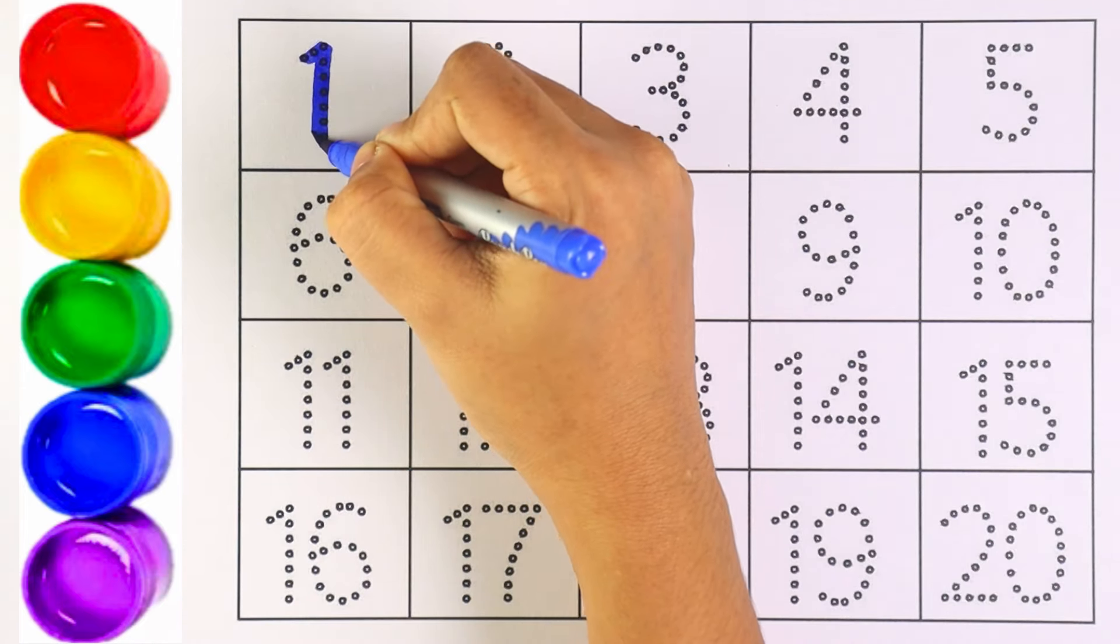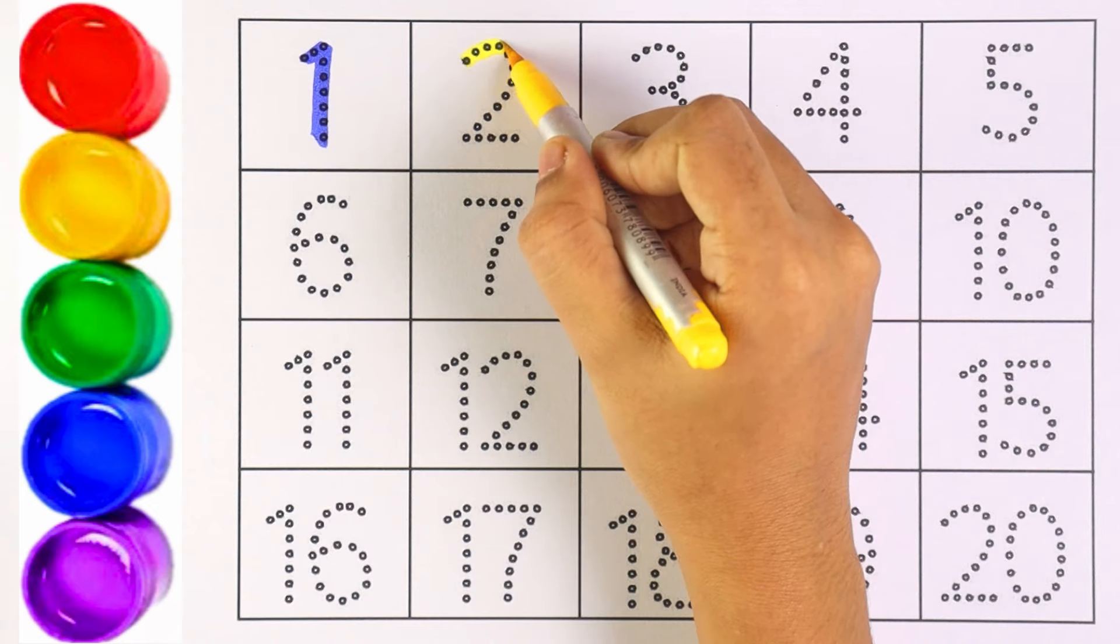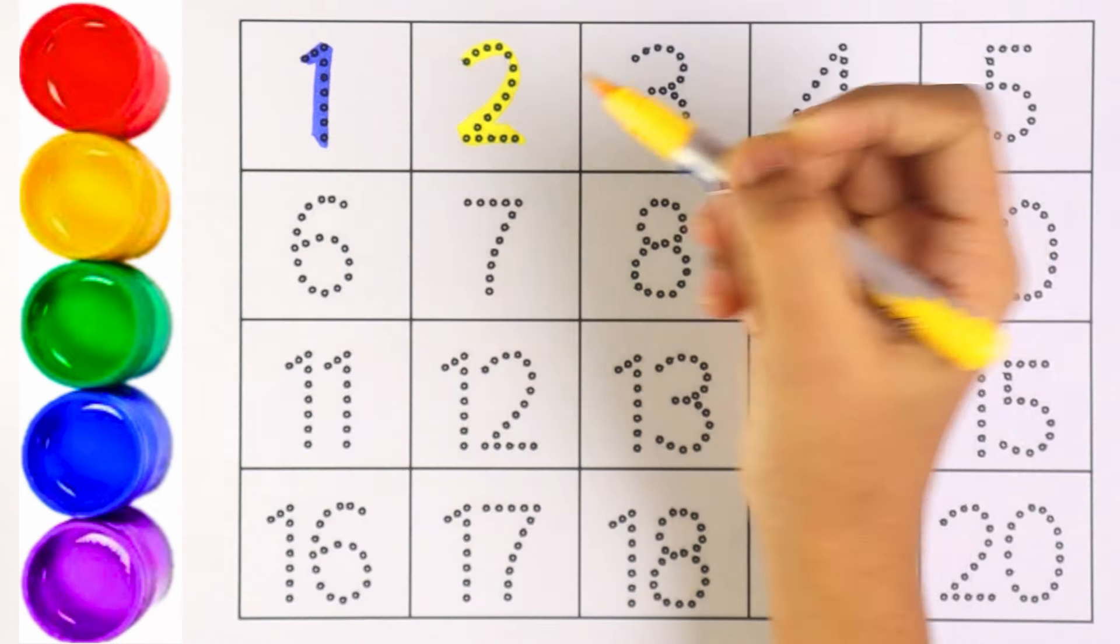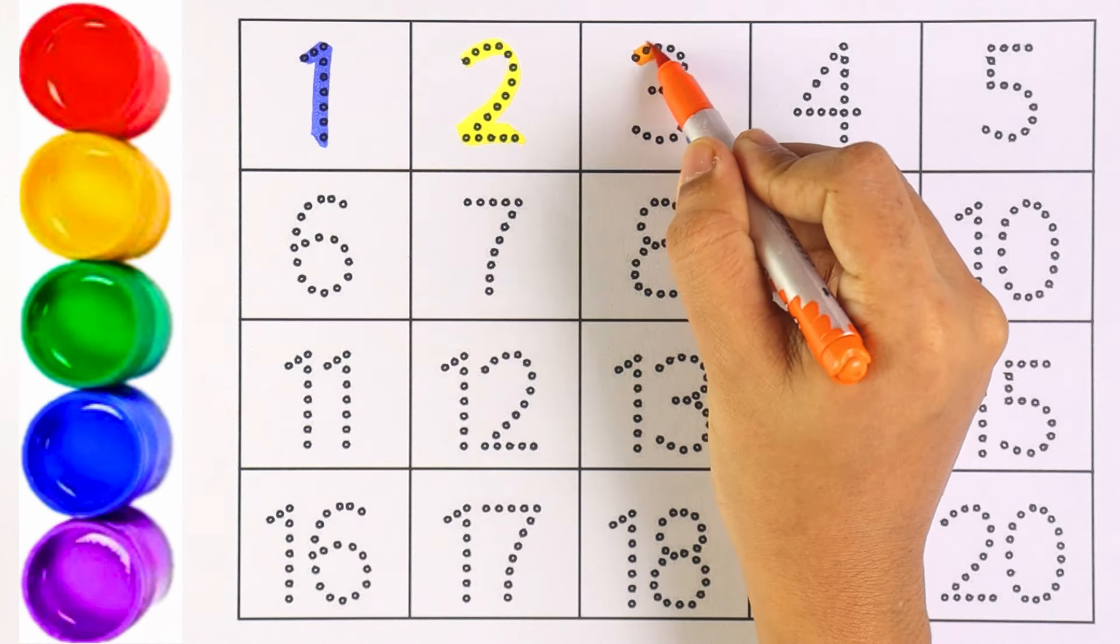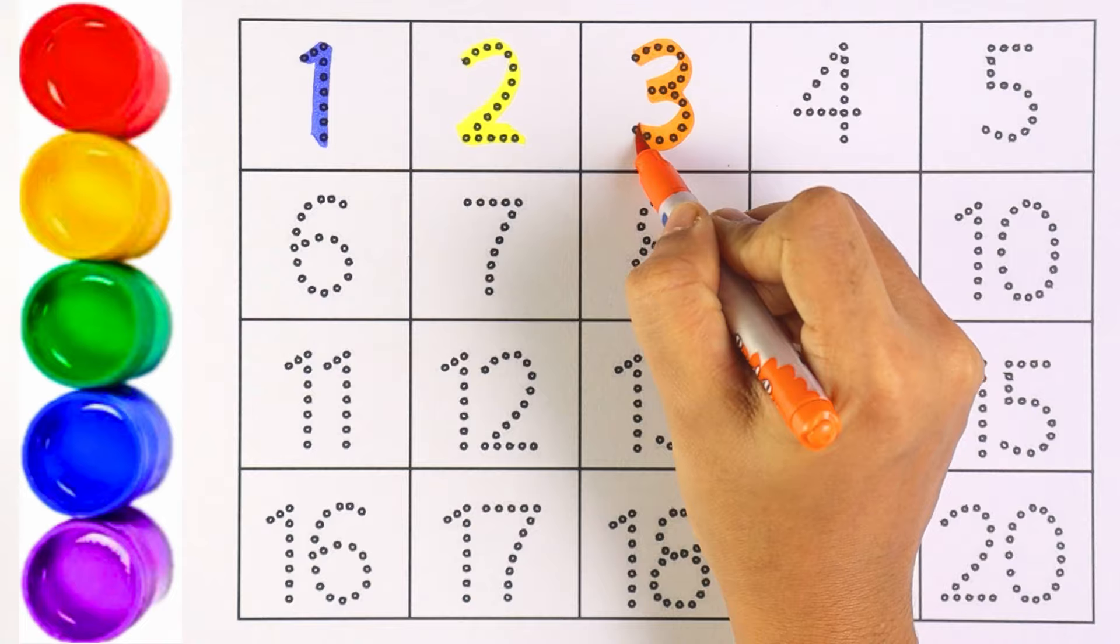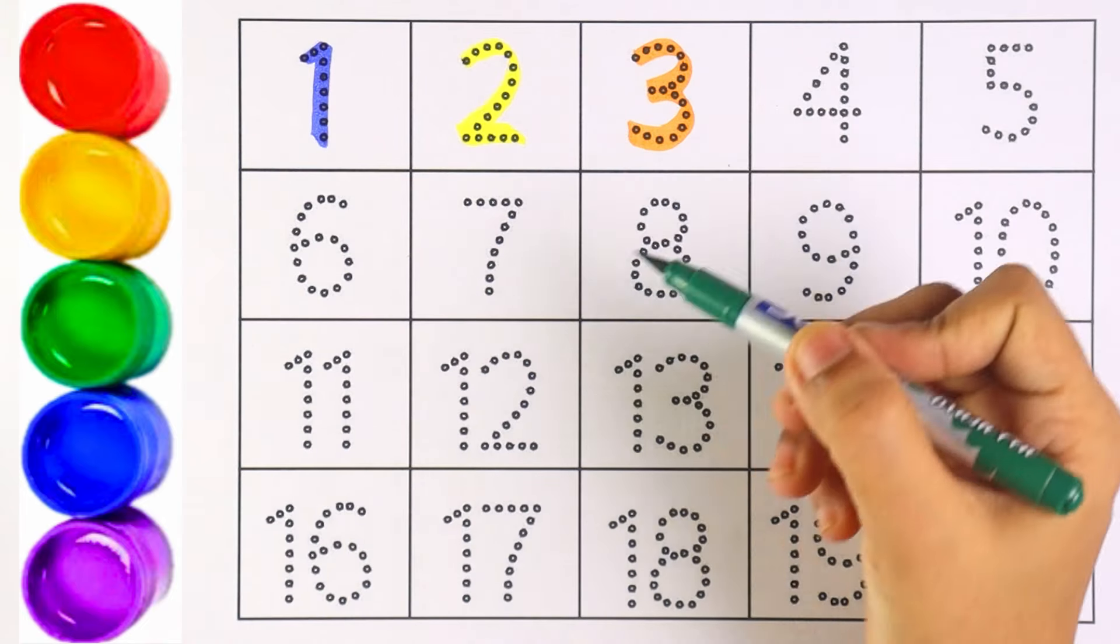I'm using blue color for number 1. Number 1. Yellow color for number 2. Which number is this, kids? That's right. It's number 2. Orange color, number 3. Kids, can you repeat after me? Number 3.